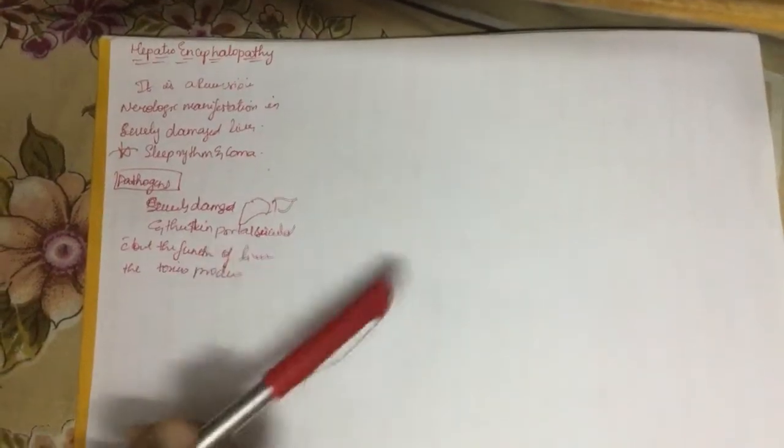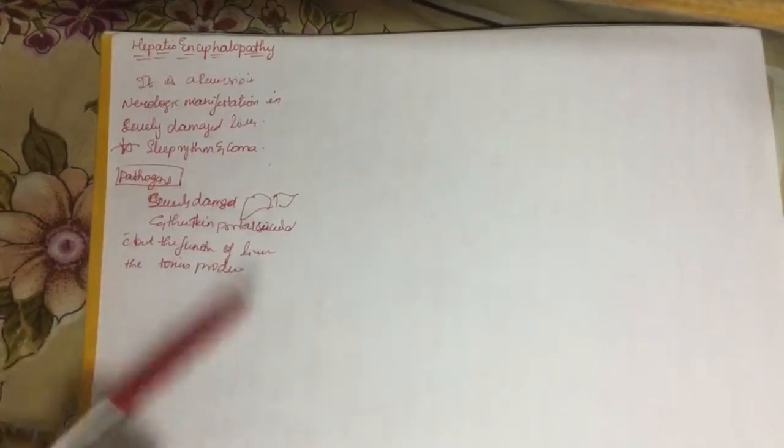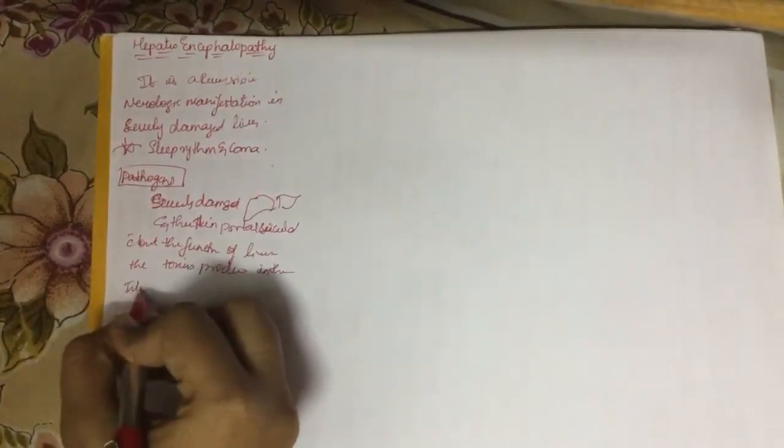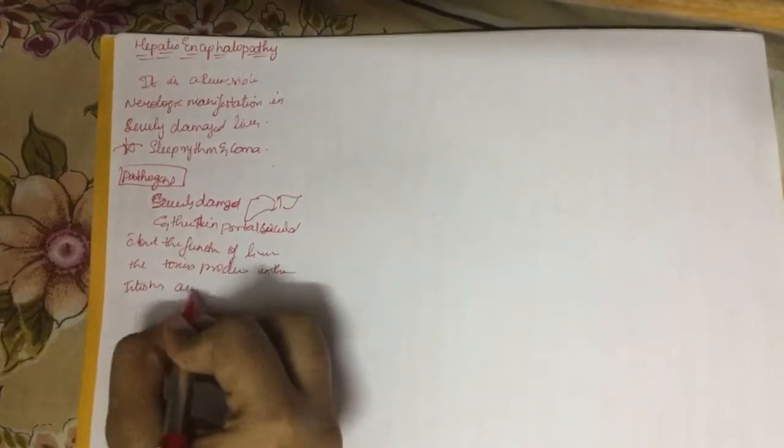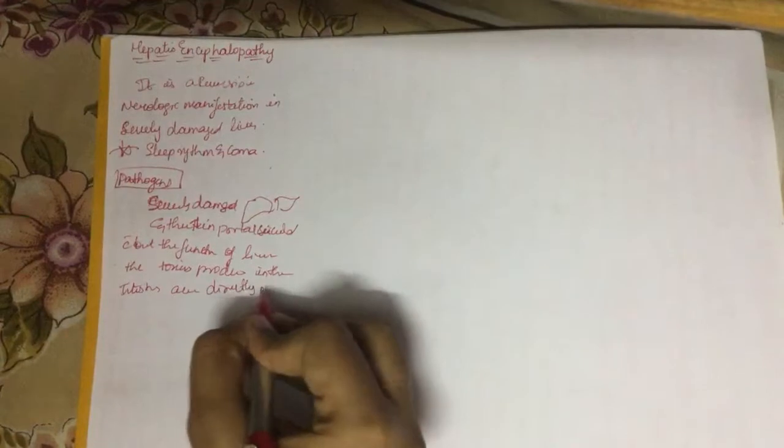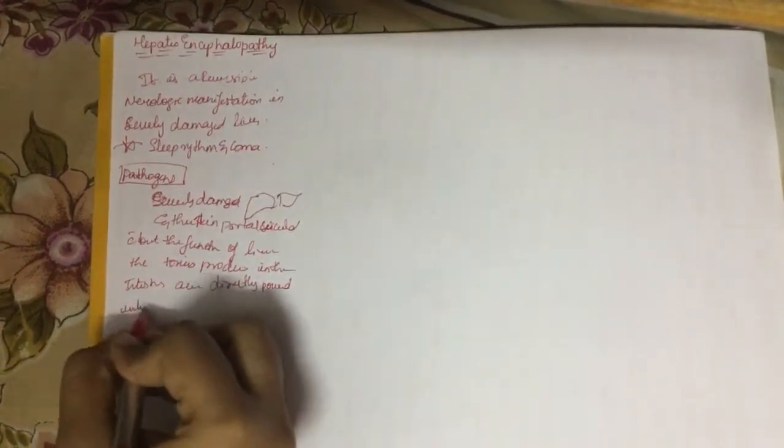Pathogenesis: In severely damaged liver, there is portal circulation without the function of the liver. The portal vein bypasses the liver.